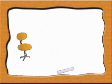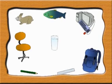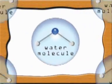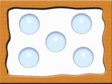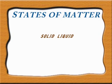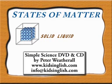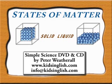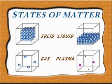Every single object that we see around is composed of matter wherever it is found. There are four different states of matter: solid, liquid, gas, and plasma. Solids are hard, liquids can run, gas can expand, and plasma's in the sun.